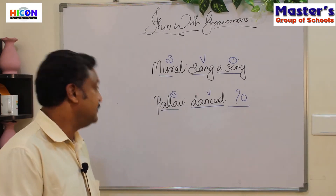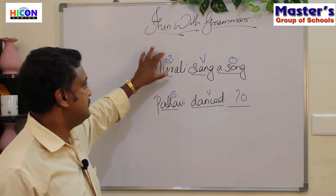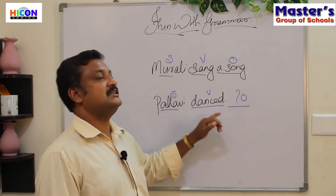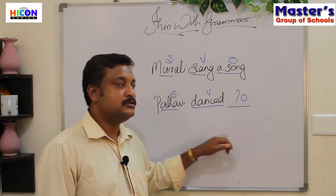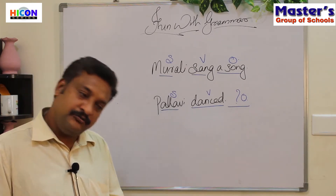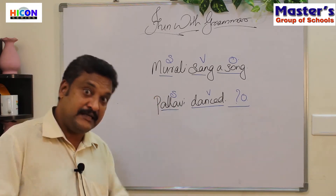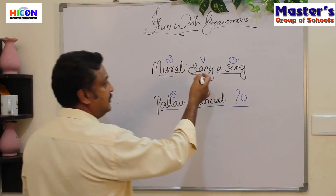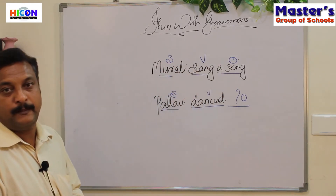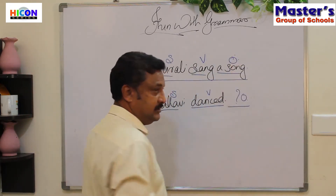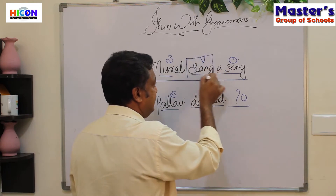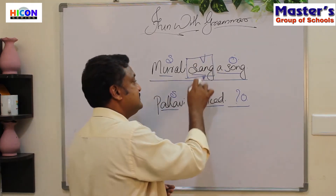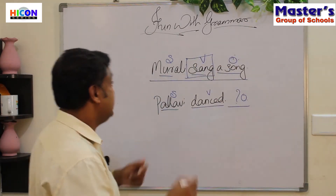In the first sentence we have a subject, a verb, and an object. In the second sentence we have only a subject and a verb. So when we have a sentence with an object, that verb in that sentence — which has an object after it — is known as a transitive verb.